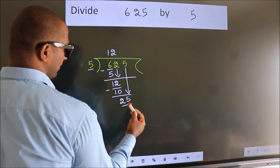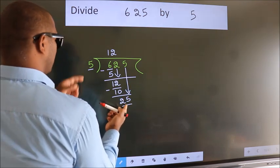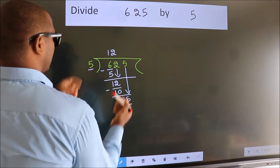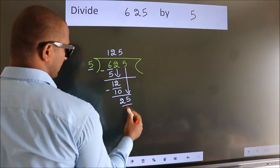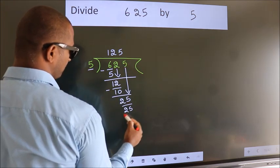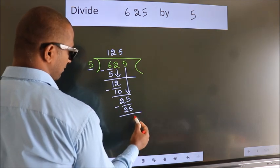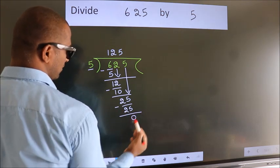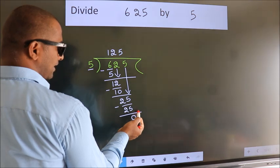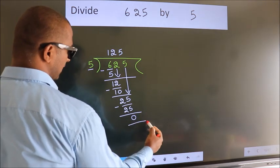So we have 25. When do we get 25 in the 5 times table? 5 fives are 25. Now we subtract. We get 0. No more numbers to bring down, so we stop here.